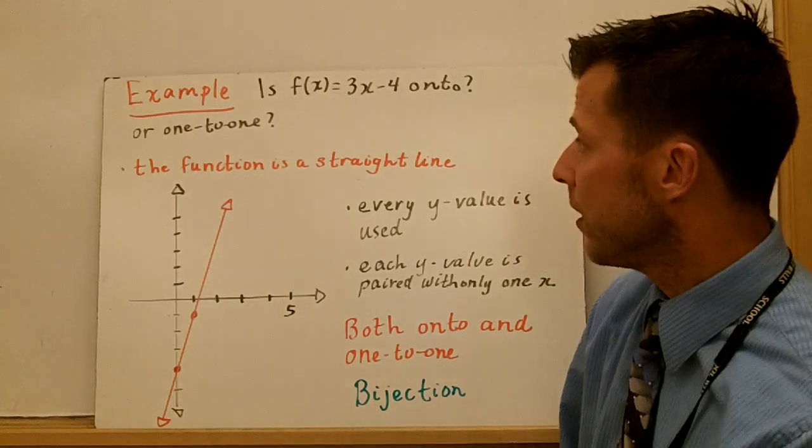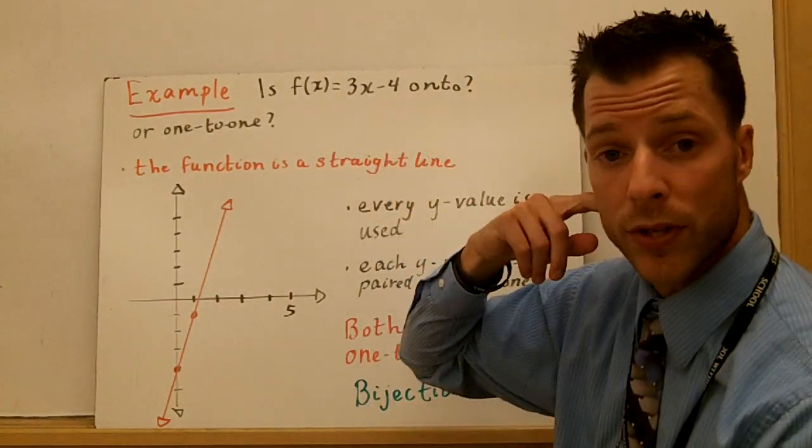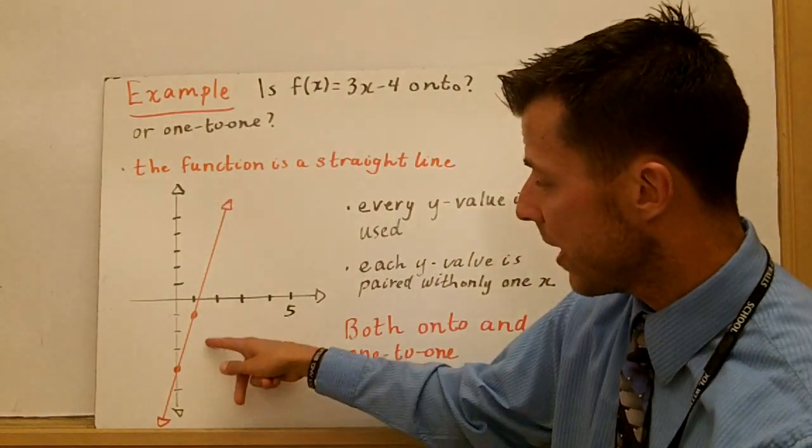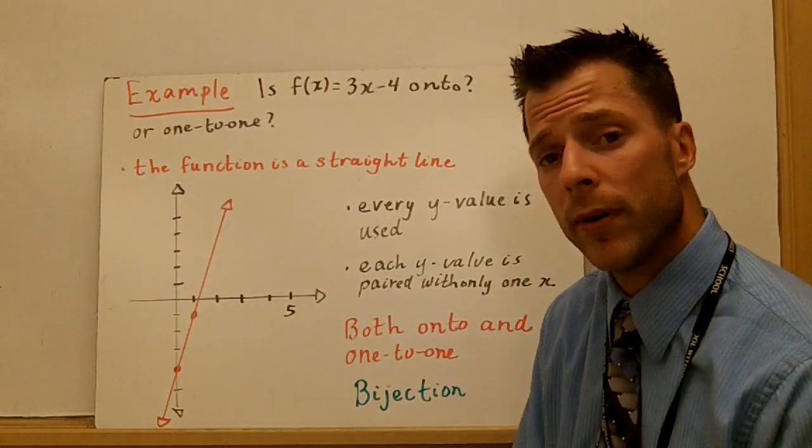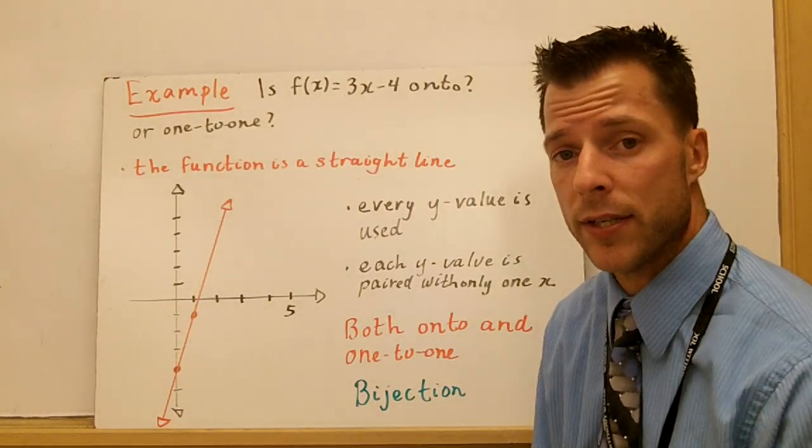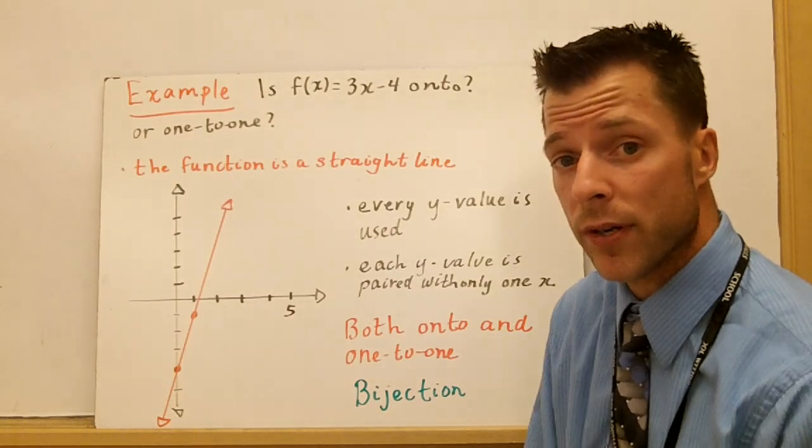So is the function f(x) = 3x - 4 onto, or is it one-to-one? Now this is a linear equation, 3x - 4, so I've graphed it here. Now you should know by now, linear equations never have y values that repeat. So I'm going to know automatically, linear equations are one-to-one functions.